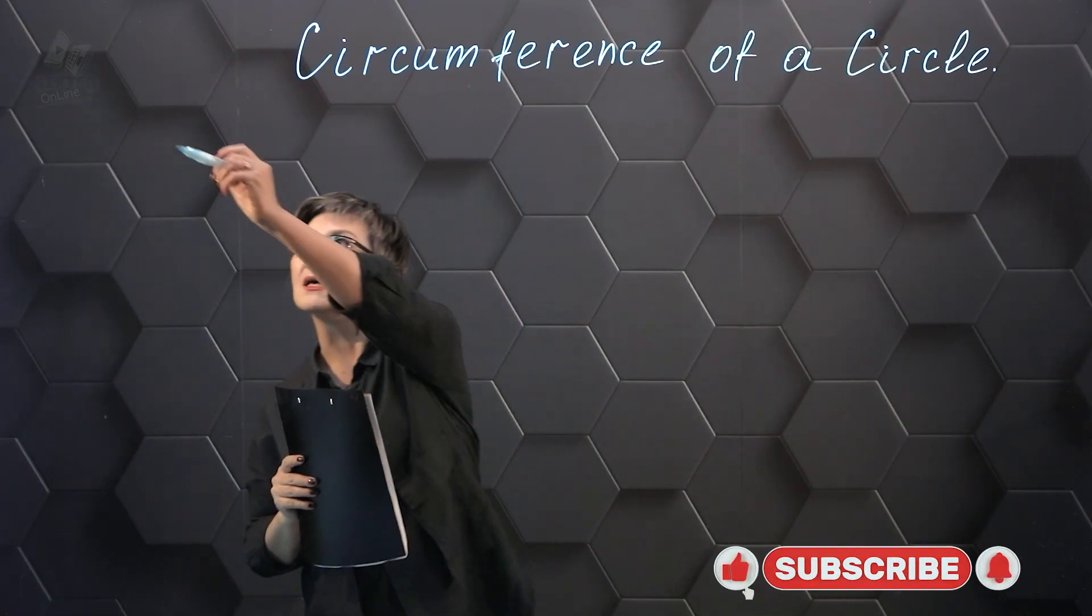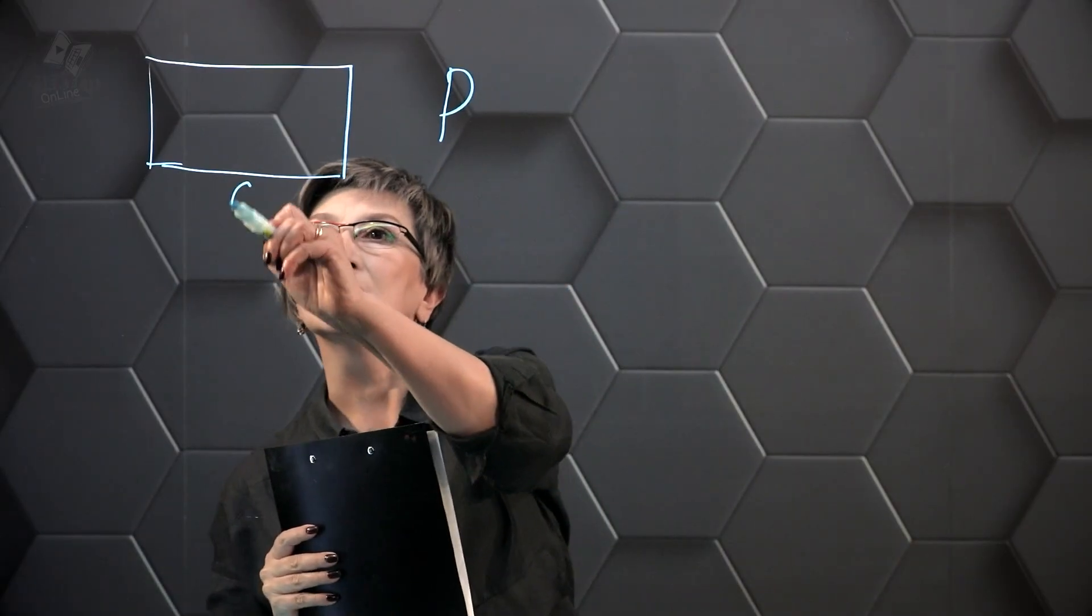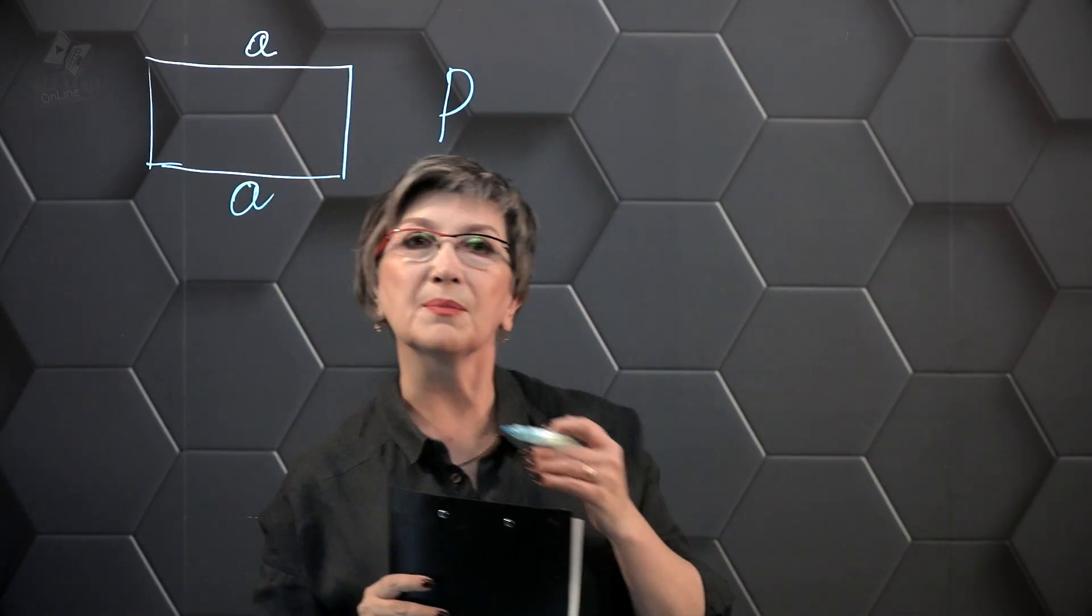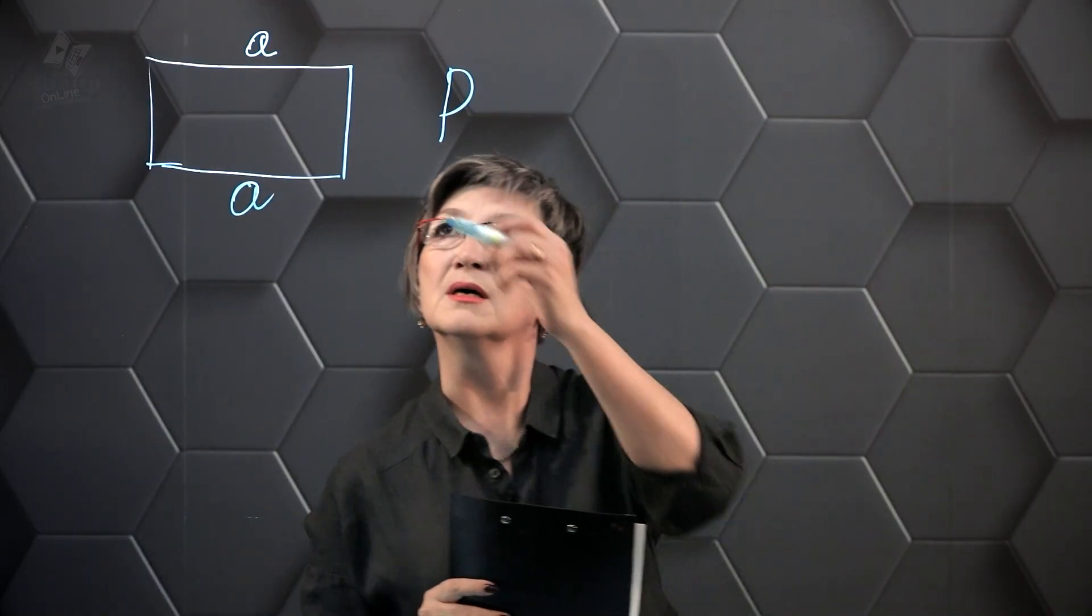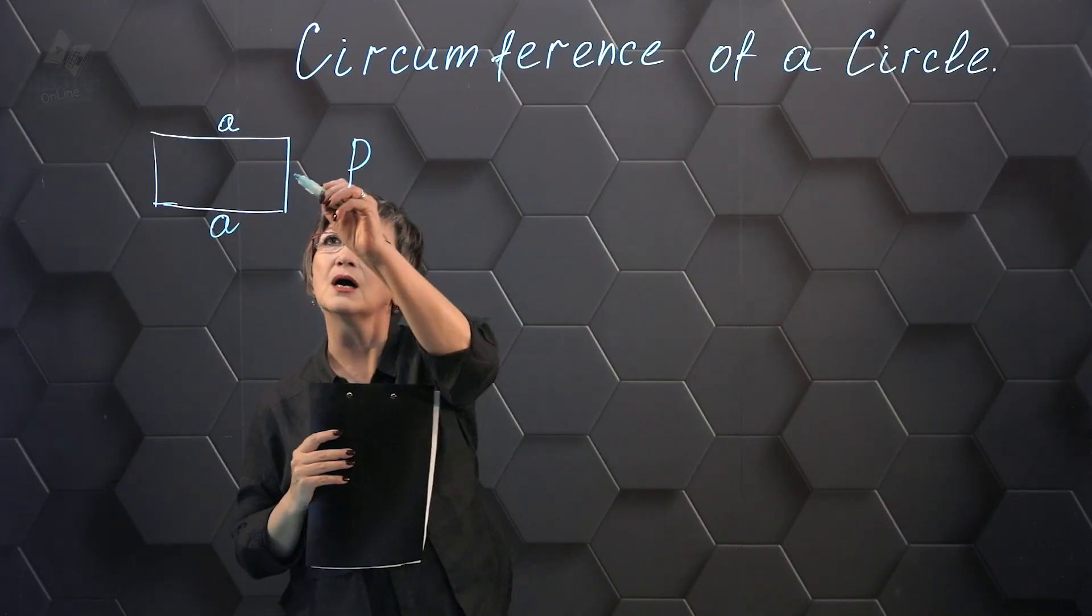If I take a rectangle, then in order to find the perimeter of the rectangle I have to add up all the sides, the lengths of all the sides. Since a rectangle has two opposite sides that are equal, it's customary to denote the length by A and the width by B.